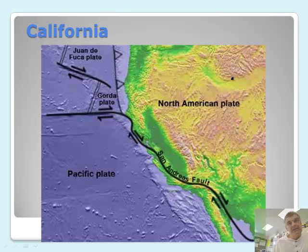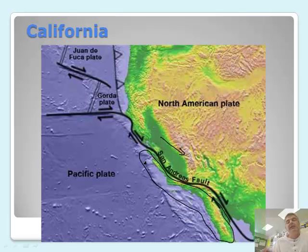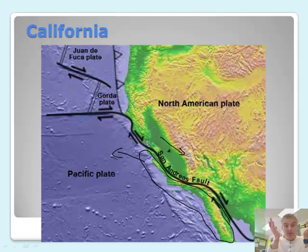In California, transform faults are moving in opposite directions. A lot of people think that California is going to break off, but it's actually just this portion of California — which also includes parts of Baja Mexico — that's going to break off someday. Most of California will stick around.